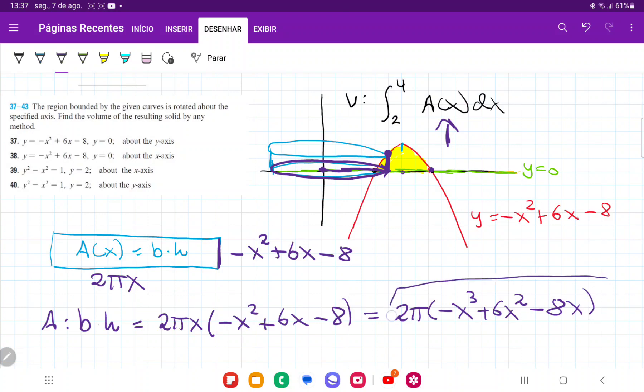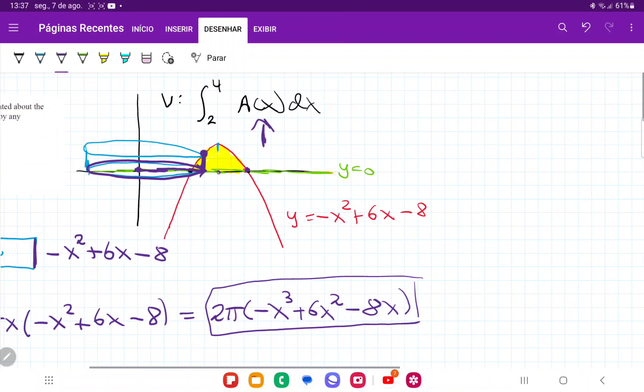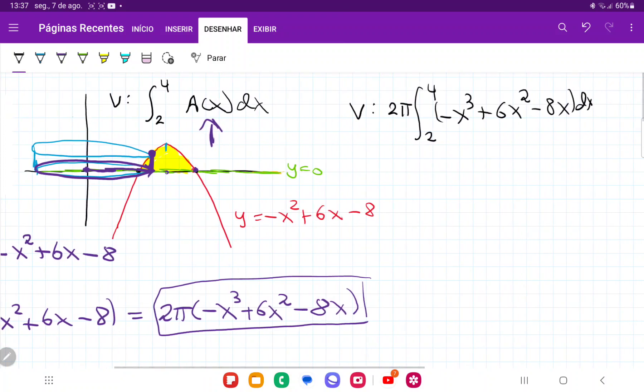And so once I have an expression for my area, I can now put this in my integral. And so my volume is going to be the integral from 2 to 4. 2 pi goes outside because it's a constant. And so it's the integral of minus x cubed plus 6x squared minus 8x and all of this times dx.